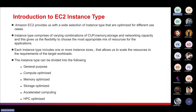Now let's look at instance types. Amazon provides a selection of instance types optimized for different use cases. Instance types comprise varying combinations of CPU, memory, storage, and networking capacity, giving flexibility to choose the right mix of resources. Each instance type includes one or more sizes. Instance types are divided into: general purpose, compute optimized, memory optimized, storage optimized, accelerated computing, and HPC optimized.